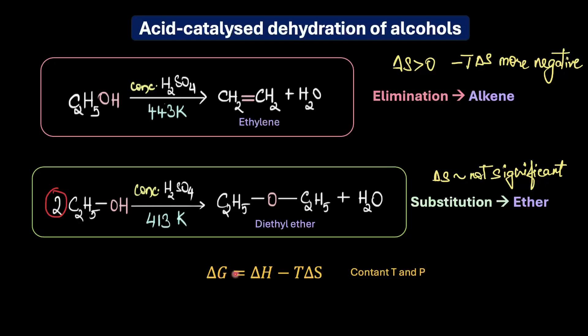We already know that at lower temperatures elimination reaction is not favored and this allows the substitution reaction to become the dominant pathway at the lower temperature. So what's the key takeaway here? That a higher temperature favors elimination reaction giving us alkenes whereas a lower temperature favors substitution reaction giving us ether.